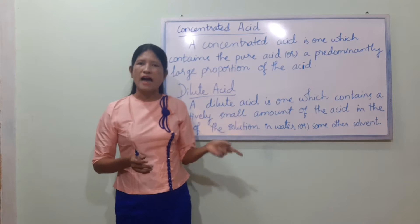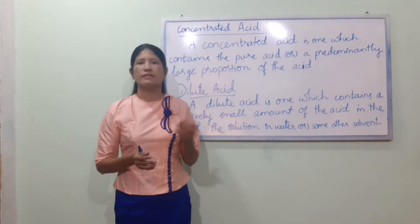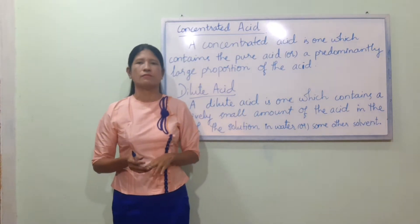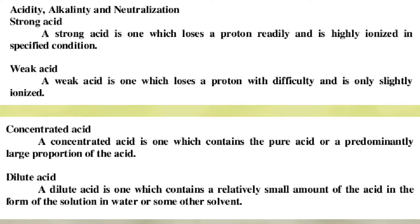To recap: strong acid, weak acid (VACID), concentrated acid, dilute acid — these are the definitions we have covered.